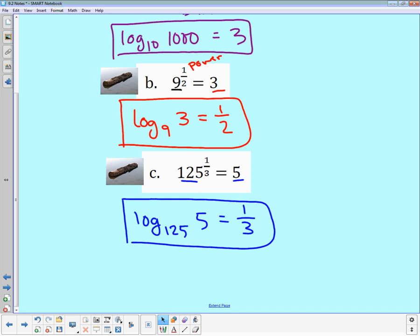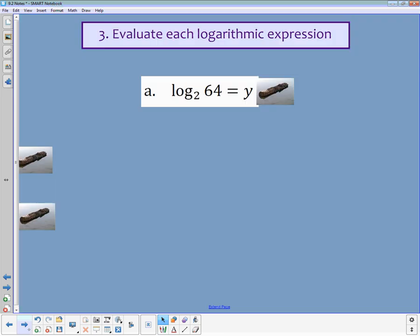Now in number 3, it says evaluate each logarithmic expression. So I'm going to start with the log base 2 of 64 is equal to y. Well, I know that 2 is the base. I know I'm raising it to some y power, and I want it to equal 64. So this is where I'm going to get out my calculator, and I'm going to plug things in. 2 to what power gives me 64? And you will find out that when y is equal to 6, 2 to the 6th power is 64.